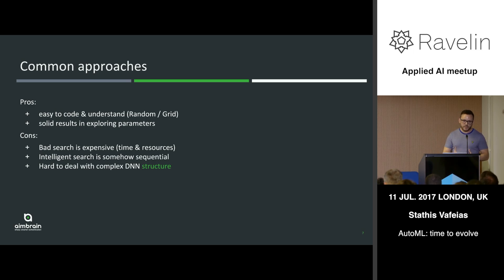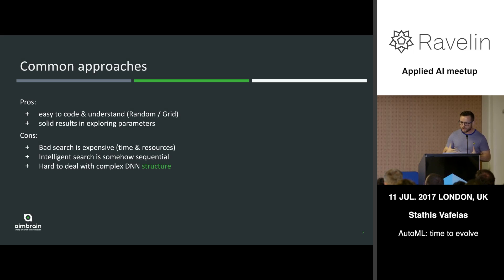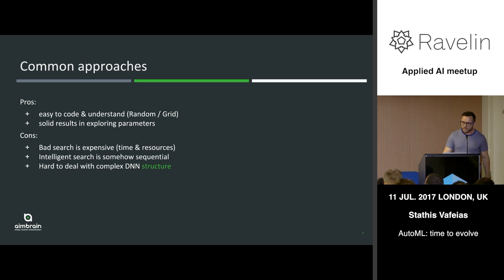There are some pros to these approaches. Random and grid search are very easy to implement — just a few lines of code, and there are plenty of packages out there that can do it. The results are solid and you explore a large number of parameters. The more advanced methods produce even better results and are better at doing that. But they come with some pitfalls.